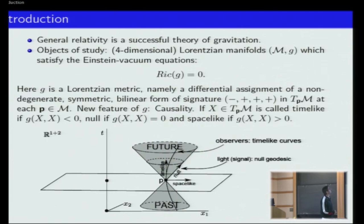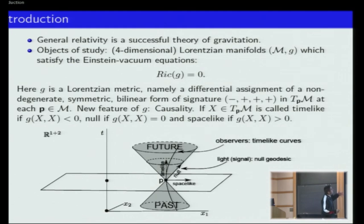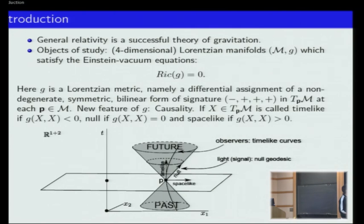General relativity is now considered to be the classical theory that describes gravity and the evolution of systems under gravity. The physical theory considers four-dimensional Lorentzian manifolds, and in particular, we impose on the metric the equation that the Ricci curvature is equal to zero.